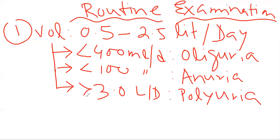Oliguria and anuria most typically can be seen in case of renal failure or renal shutdown. When there is renal shutdown, there will be anuria. Polyuria mainly can be seen in case of diabetes insipidus, which can be nephrogenic and neurogenic diabetes insipidus.